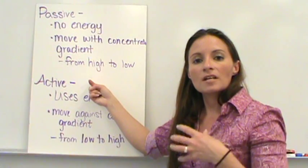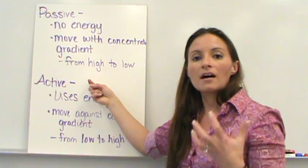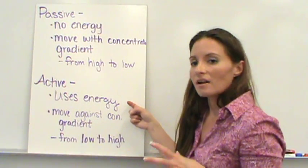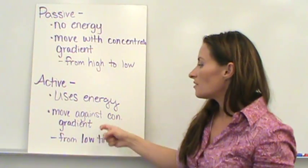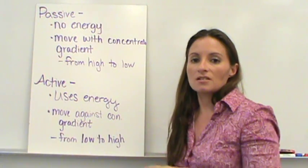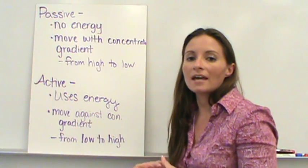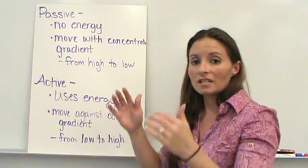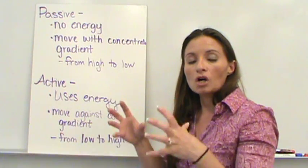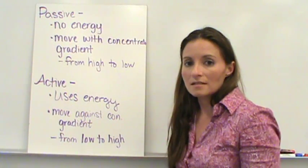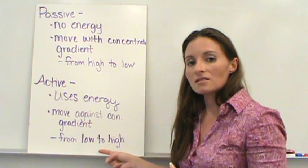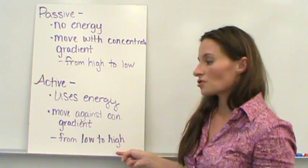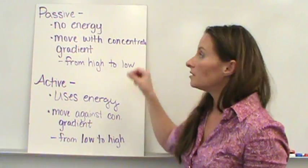Active transport, on the other hand — think about being very active: going out, using a lot of energy. Active transport requires a lot of energy. This is moving against the concentration gradient. For example, if you already have a lot of potassium inside your cell but still need to move more in, you're going against the concentration gradient — moving from low concentration to high concentration — and that requires a lot of energy.